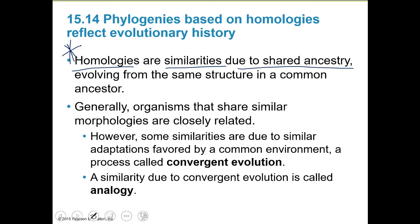We can identify homologies by looking at the dolphin fin, the human arm, the cat leg, and the bat wing - all of which had a common ancestry. Generally, organisms that share similar morphologies are more closely related. Morphology is about form and also the look of things, so when things look similar, they tend to be closely related.